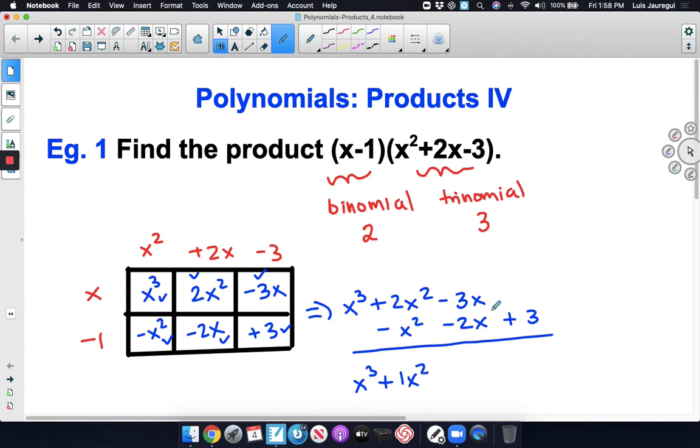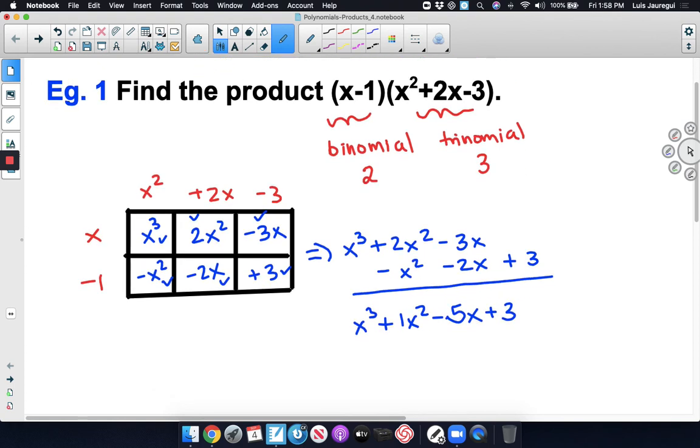Then we go to the linear terms. We have negative 3 of them and negative 2 of those, so that's negative 5x. And lastly, we go to the constant term, which is simply 3. We don't necessarily have to write down the coefficient of 1; we usually leave it implicit, so we can say that this is x cubed plus x squared minus 5x plus 3.